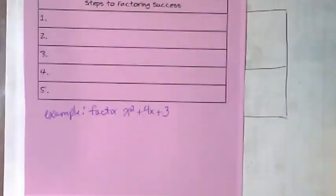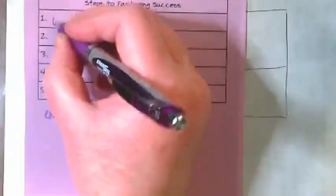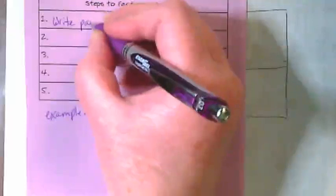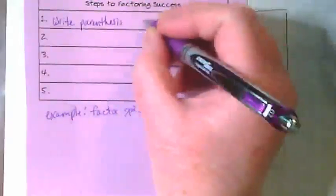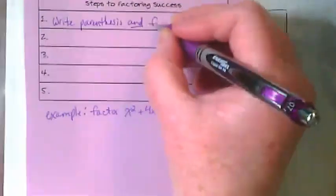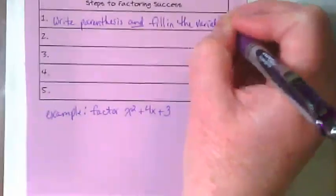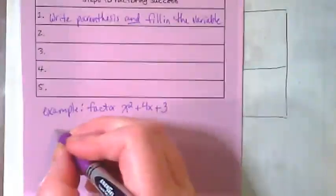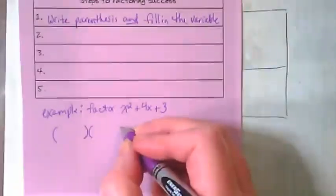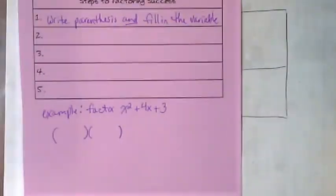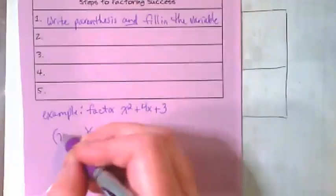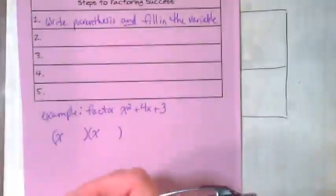Our first step is to write the parentheses and fill in the variable. So we're going to write our parentheses down there to get our answer space ready, and both of those parentheses are going to get an x and we're going to place it in the first spot.